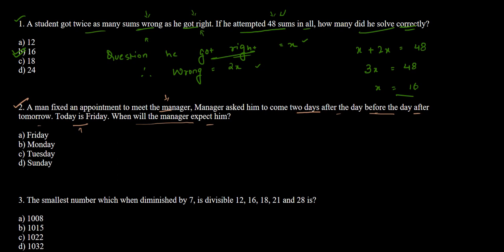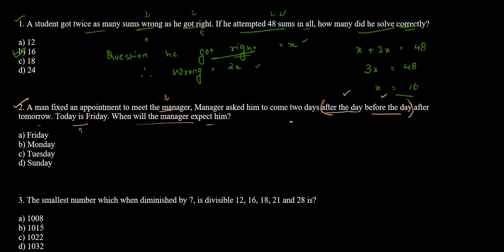We have: two days after the day before the day after tomorrow. Notice that 'after the day' and 'before the day' cancel each other out — they give us the same result and are of no use. So we are simply left with: come two days after tomorrow.